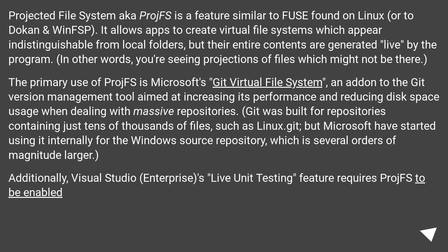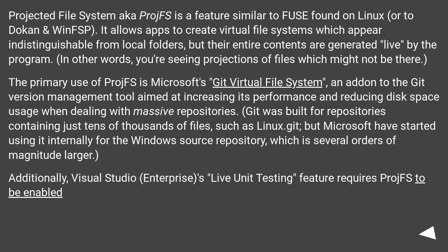The primary use of ProjFS is Microsoft's Git Virtual File System, an add-on to the Git version management tool aimed at increasing its performance and reducing disk space usage when dealing with massive repositories. Git was built for repositories containing just tens of thousands of files, such as Linux.git, but Microsoft have started using it internally for the Windows Source Repository, which is several orders of magnitude larger.